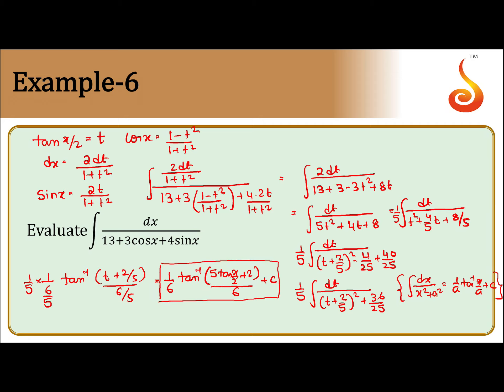To summarize: we replaced cos x with (1 - t²)/(1 + t²) and sin x with 2t/(1 + t²), obtaining a quadratic in the denominator. Writing it in standard form, here a² = 36/25 and x = t + 2/5. Applying the formula ∫dx/(x² + a²) = (1/a)tan⁻¹(x/a) + C, the 5s cancel and we get (1/6)·tan⁻¹[(5·tan(x/2) + 2)/6] + C.